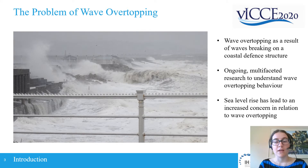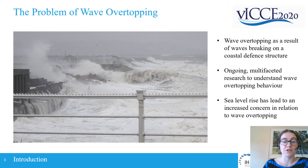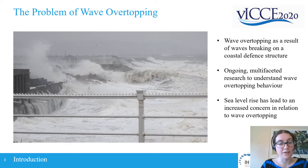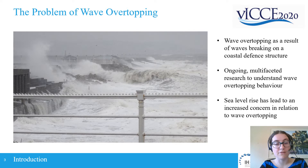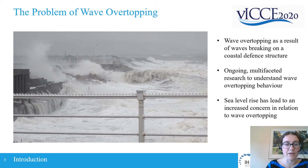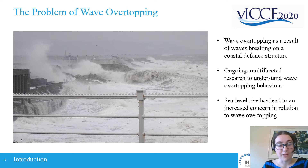Wave overtopping is the result of waves breaking on a coastal defence structure, as most of you know, and the resultant discharge coming over the top of the defence structure and flooding the area behind it. It's an ongoing problem with multifaceted research continuing globally to understand the behaviour, and is also a growing concern as sea level rise has increased the volume of overtopping. The picture in front of you is from a pier not far from our project example in Dun Laoghaire in Ireland, where you can see the waves breaking over the top of the structure and flooding the area behind it, as well as some buildings in the distance that were potentially impacted.